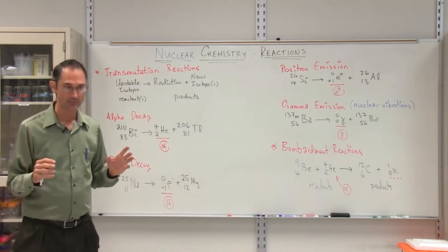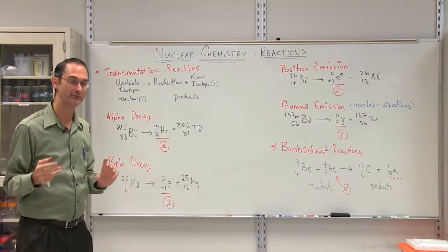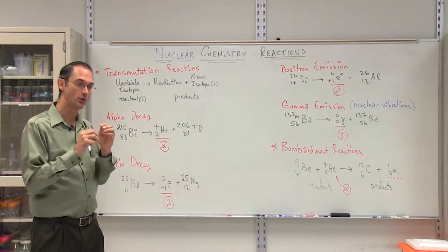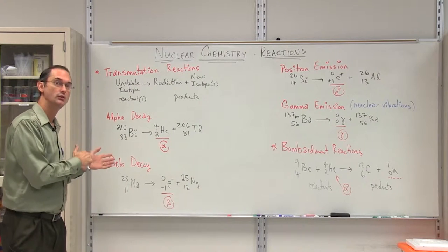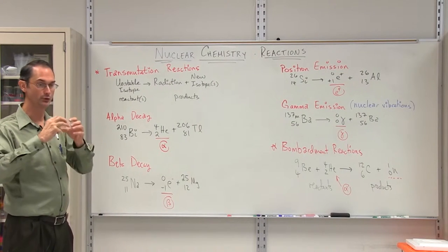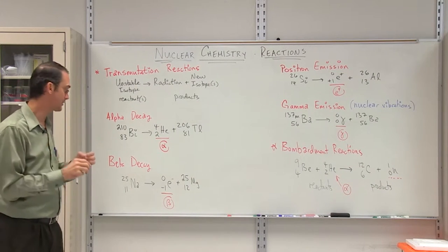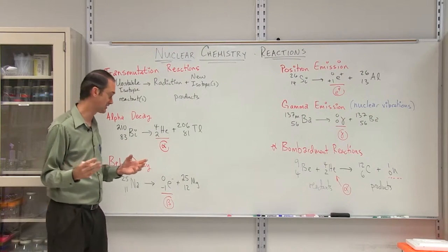Now yes, electrons aren't inside the nucleus, but very often an electron will come out of the nucleus in a way that I mentioned in a previous nuclear chemistry lecture where a neutron will turn into a proton and an electron. So sometimes the electrons do fly out of the nucleus.